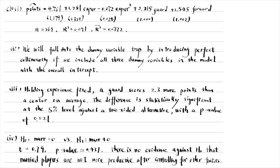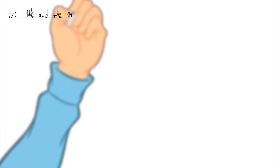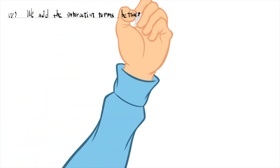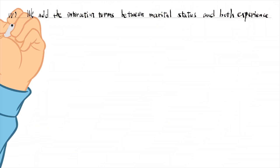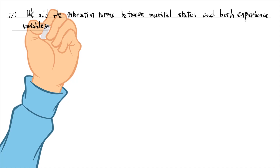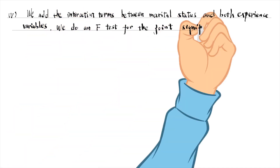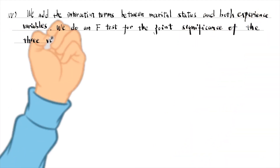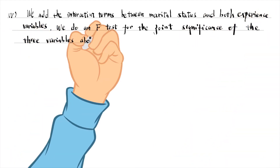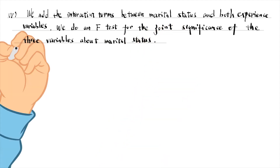There is no evidence against the null hypothesis that married players are not more productive after holding position and experience fixed. In part 5, we add the interaction term between marital status and both experience variables. We do an F-test for the joint significance of the three variables involving marital status. The F-statistic is 1.44 and its p-value is 0.23.